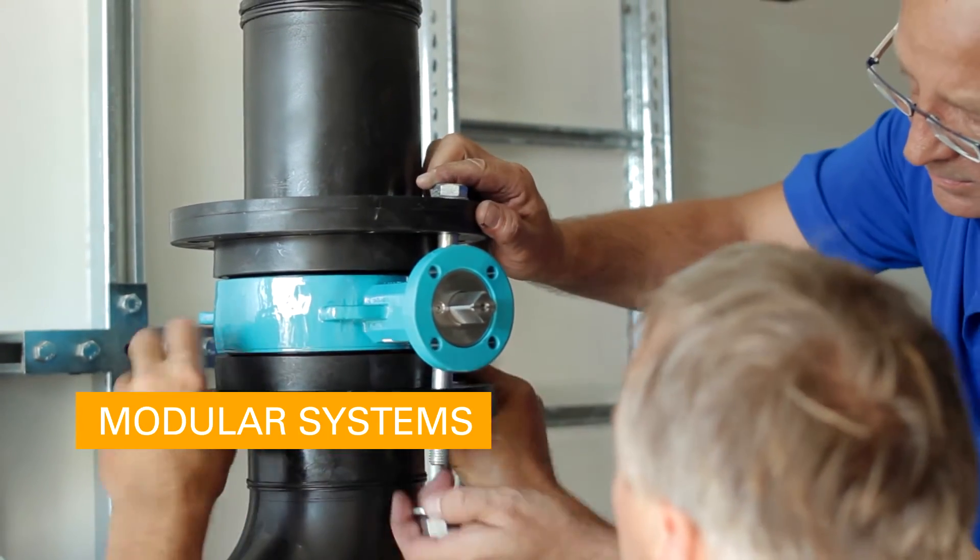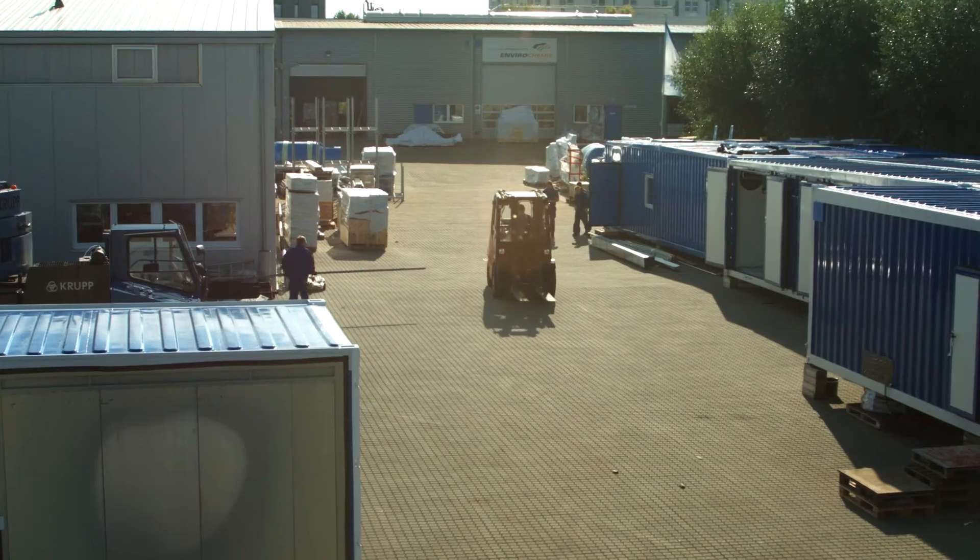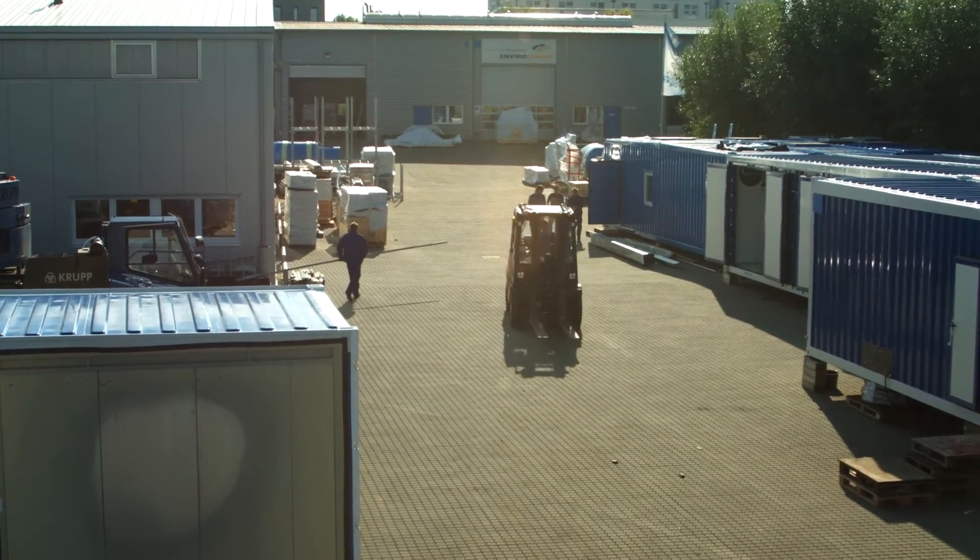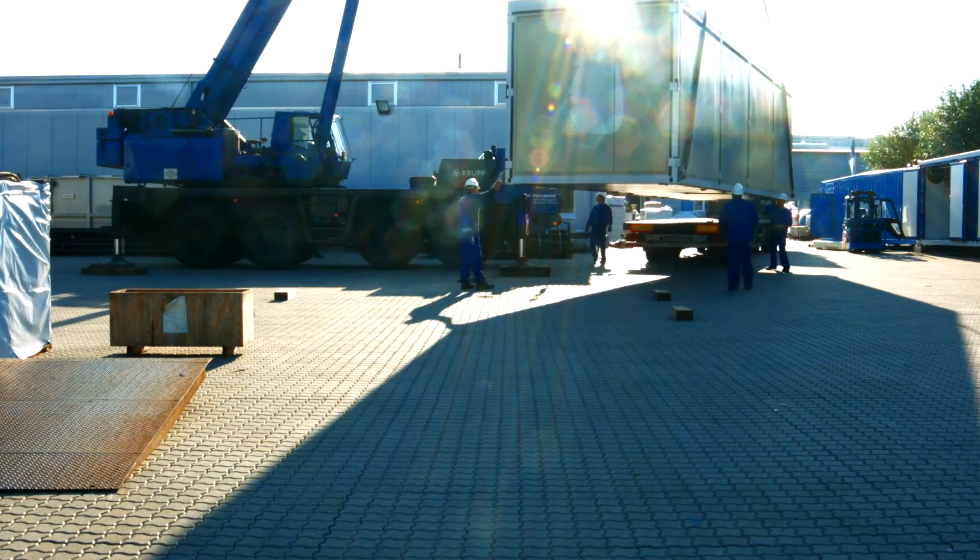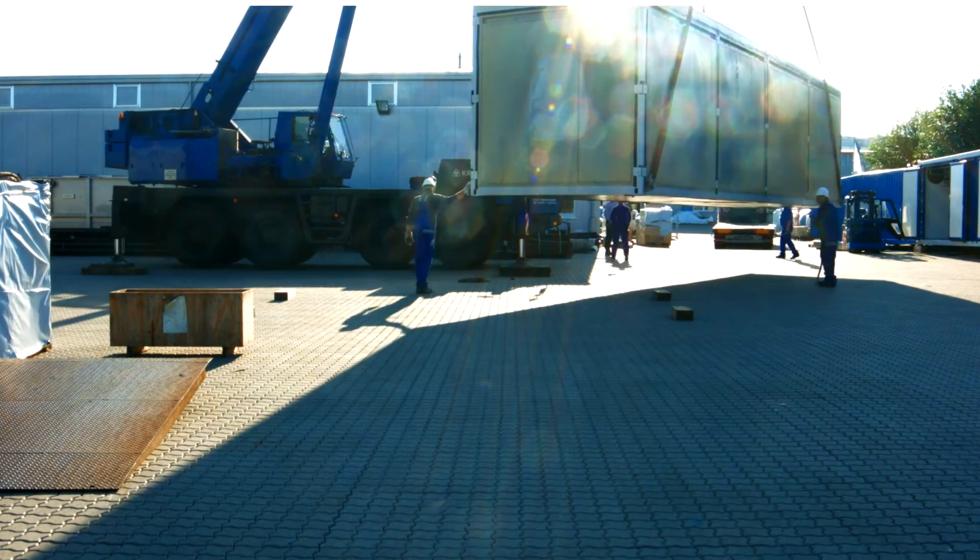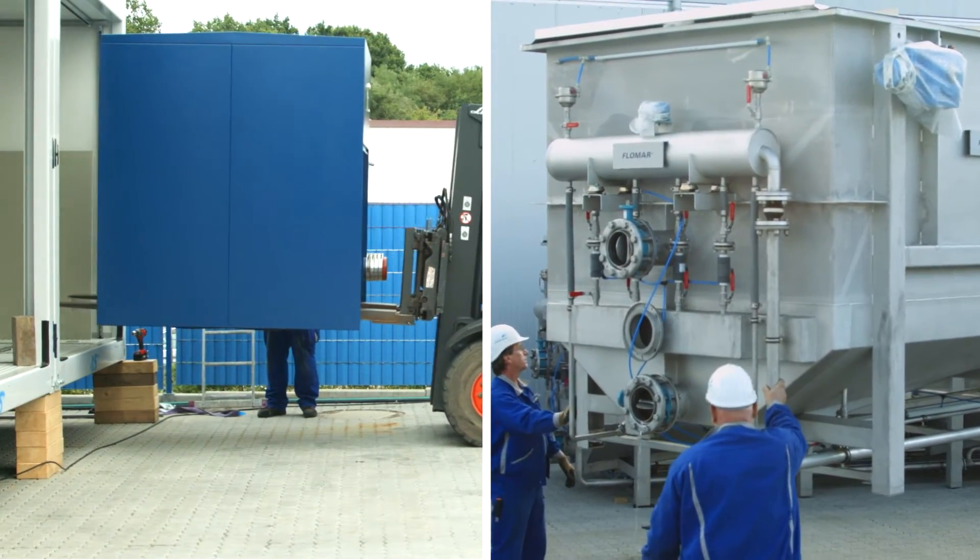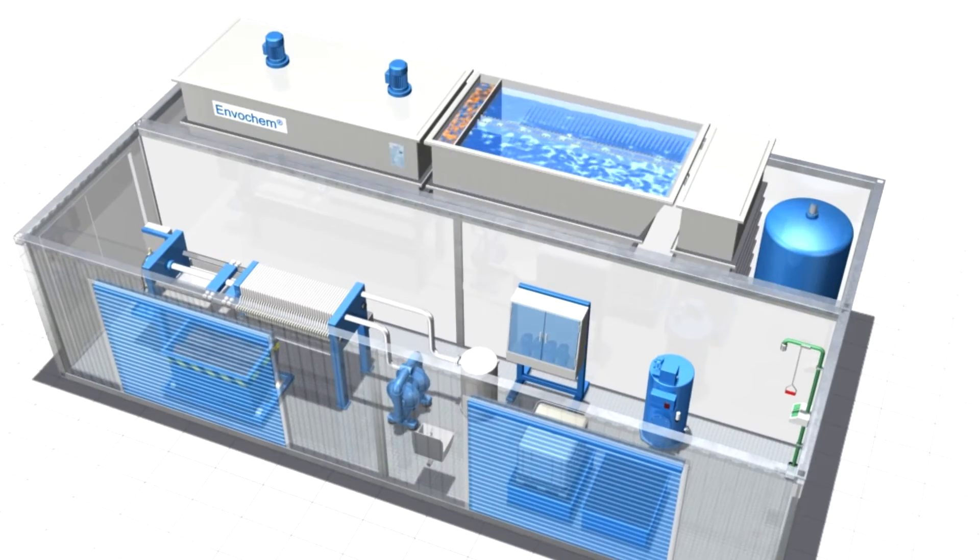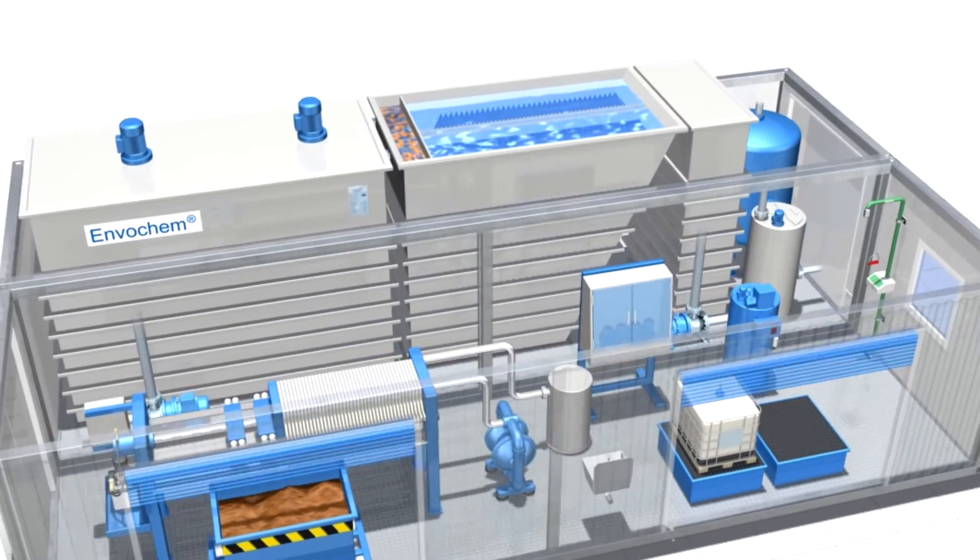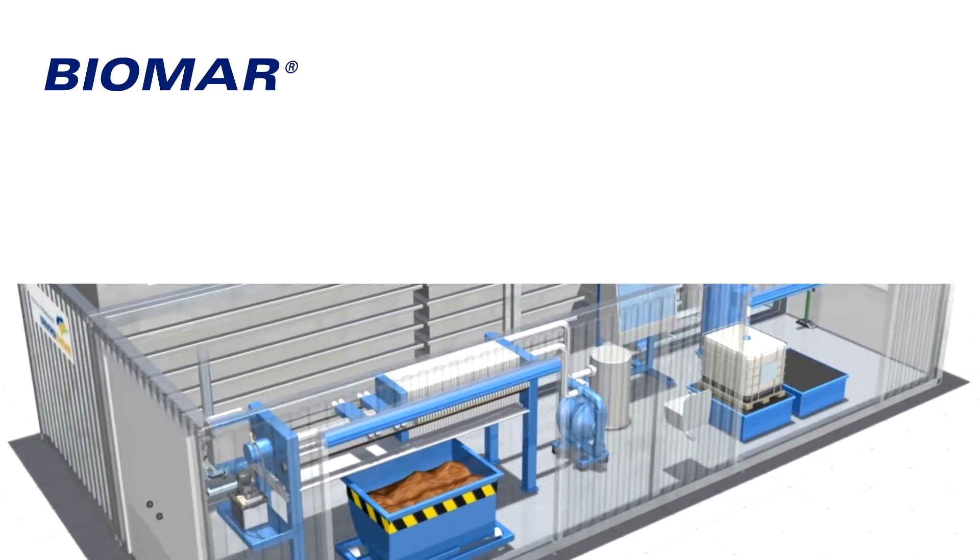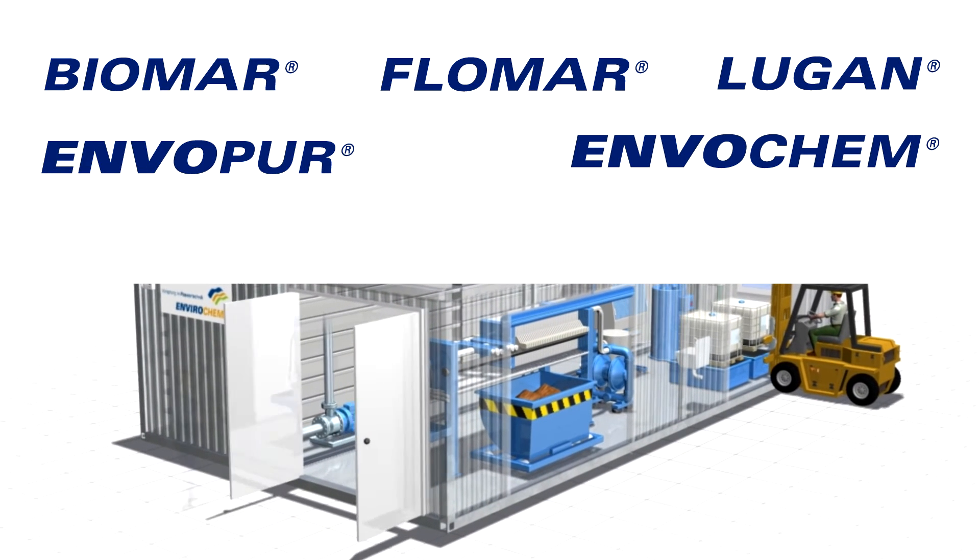Modular Systems: Efficient water treatment is always customized, specially adjusted to the individual wastewater. For this purpose, EnviroChem offers the opportunity to flexibly combine the various purification processes based on a modular toolkit. EnviModule allows the combination of EnviroChem's various product lines to suit individual needs from a modular system: Biomar, Flomar, Lugan, EnvoPure, EnvoChem, Splitomat.